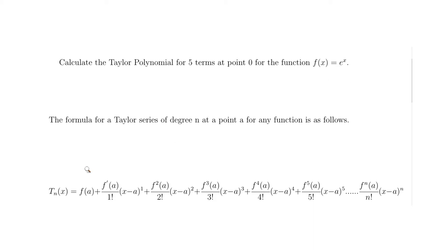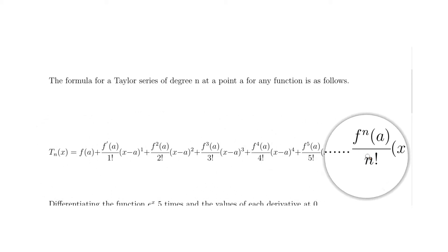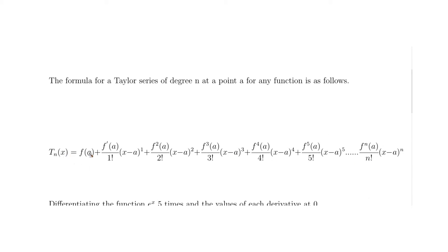The function is e to the x. Here at the bottom is the standard Taylor polynomial formula. We've got f of a — the value of the function at zero — then the first derivative at zero over one factorial times x minus a, which becomes x minus zero to the power of one. Then the second derivative at zero divided by two factorial times x minus zero squared. There's a pattern forming: for the second derivative you have a two, the two, and a two; for the third derivative a three, three, and three; and so on up to the fifth.